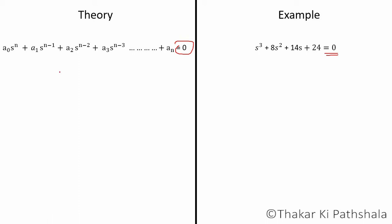Then the second step is to compare it with standard form of the characteristic equation. Compare given equation with the standard and find out constants. Here a₀, a₁, a₂ up to aₙ are constants which are in multiplication with the different power of s. If we compare this equation with the standard form, then we will find a₀ = 1, a₁ = 8, a₂ = 14, and a₃ = 24.